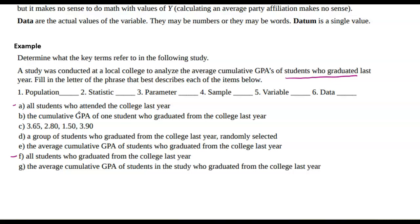So what if I'm looking for the population, which is that first one. I'm actually going to think that I don't want just all students who attended. I want all students who graduated. That's going to be my population. And then I'm going to choose from that population. A group of students who graduated from college randomly selected. The parameter of interest is I want to look at the average cumulative GPA of all students who graduated from college last year. So that would be E.